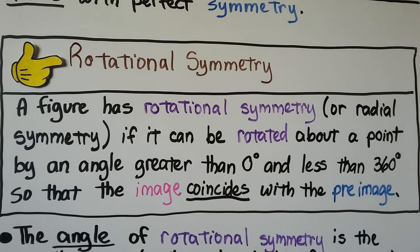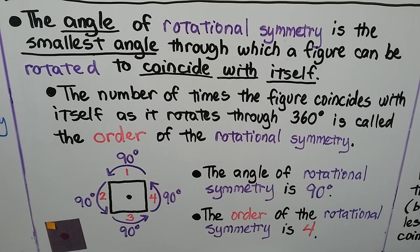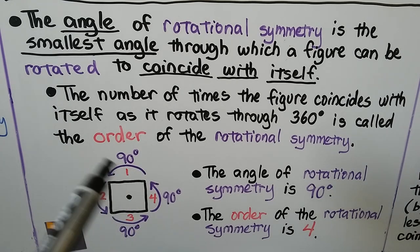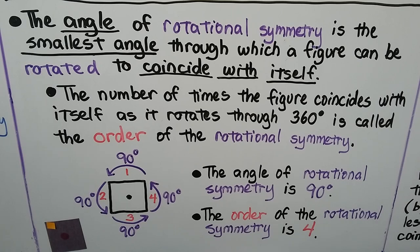Rotational symmetry. A figure has rotational symmetry, or radial symmetry, if it can be rotated about a point by an angle greater than zero degrees and less than 360 degrees so that the image coincides with the pre-image. The angle of rotational symmetry is the smallest angle through which a figure can be rotated to coincide with itself. The number of times the figure coincides with itself as it rotates through 360 degrees is called the order of the rotational symmetry. So if we have a square and turn it 90 degrees, we can do it four times — the angle is 90 degrees and the order is four.